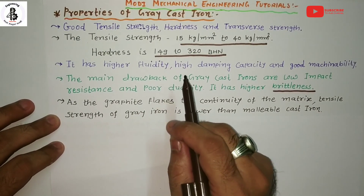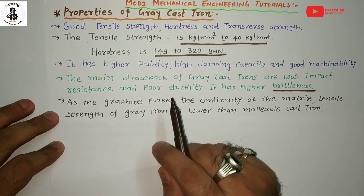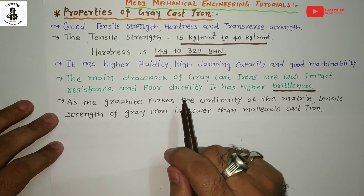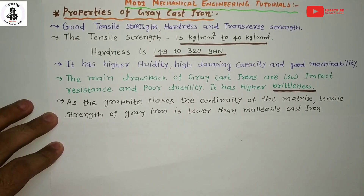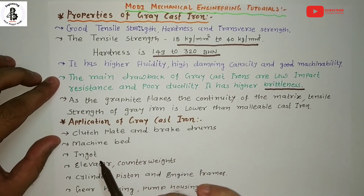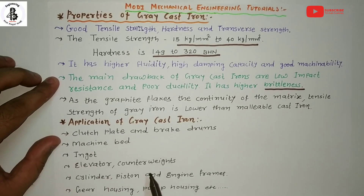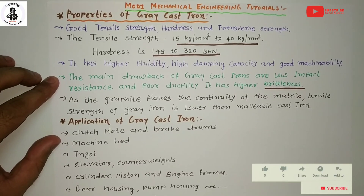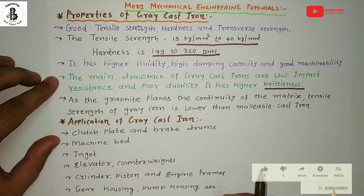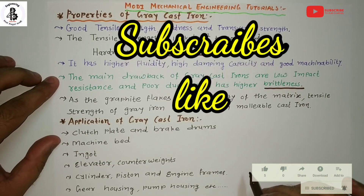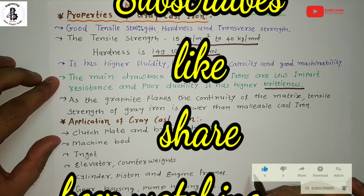Applications of gray cast iron in engineering include: clutch plates and brake drums, machine beds, ingots, elevator counterweights, cylinder pistons and engine frames, gear housing, and pump housing. If you like this video, please subscribe and share Modi Mechanical Engineering Tutorials. Thank you.